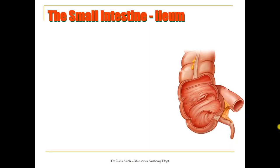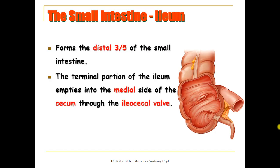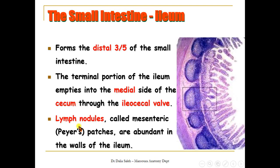The last region of the small intestine is the ileum, forming the distal three-quarters of the small intestine. Its terminal portion empties into the cecum (the beginning of the large intestine) through the ileocecal valve. Inside the wall of the ileum, we have special aggregations of lymphoid tissue called Peyer's patches, which can be seen along the wall of the ileum.